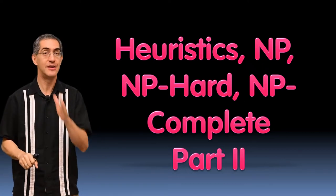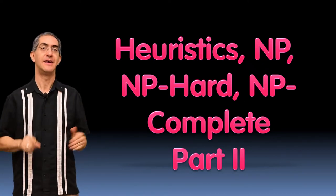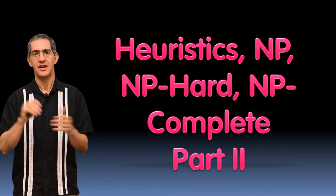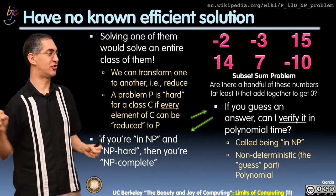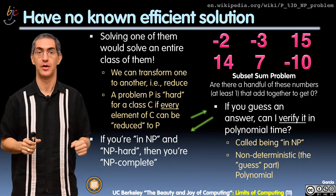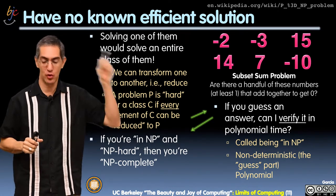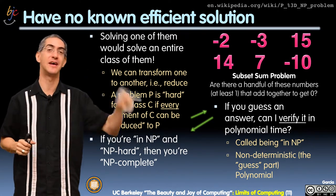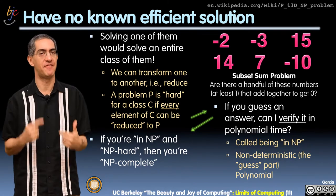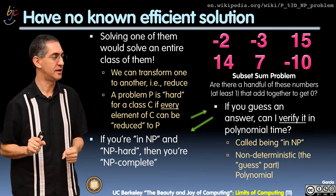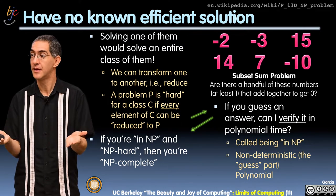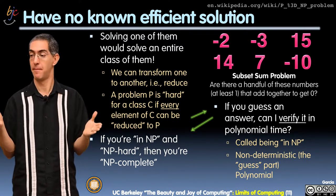Here's a cool new idea: what if you could guess a solution? For example, subset sum. How about the minus 2 and the 15 and the minus 10? Can I verify that your solution is the correct solution in polynomial time?